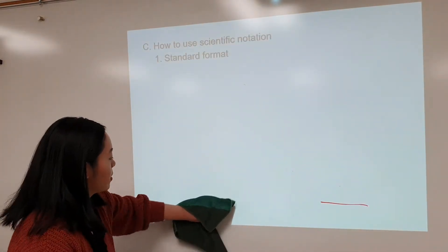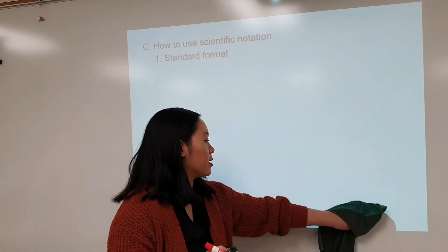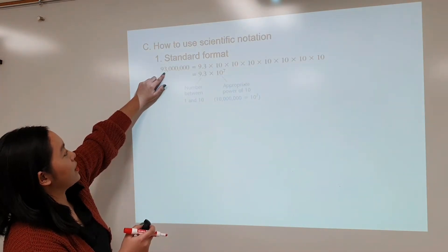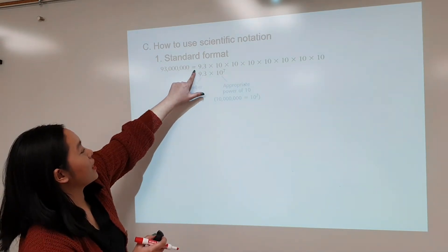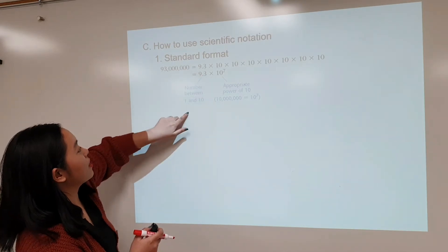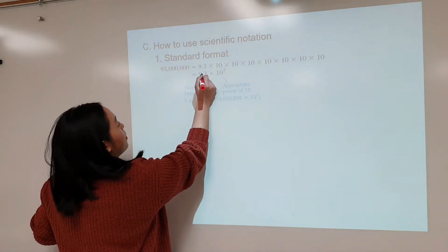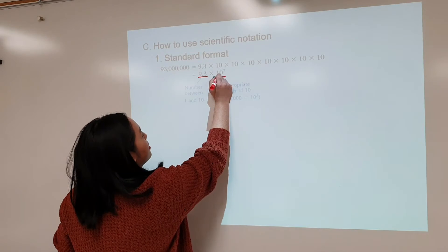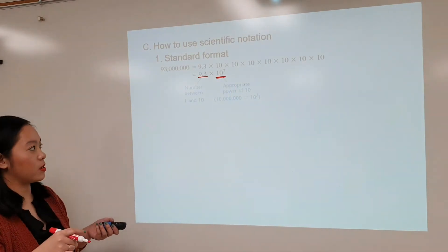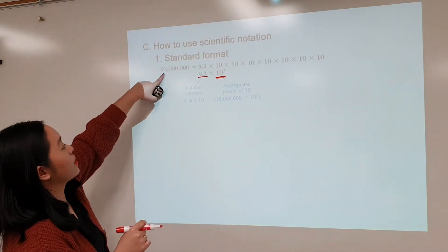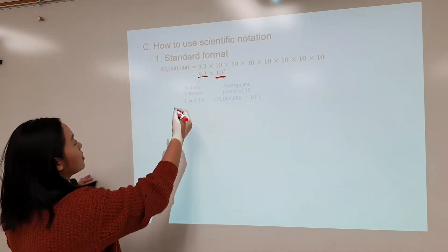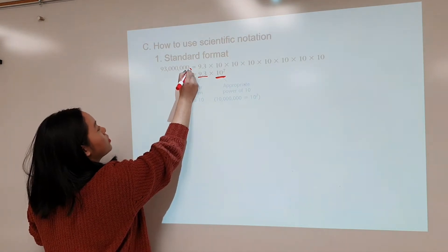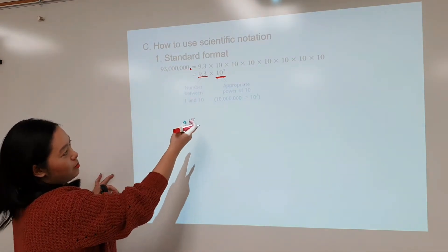So how do you actually write scientific notation? There's a general format we follow. For example, 93 million — when you break it down, there are two parts to scientific notation. The first part is a number between 1 and 10, multiplied by 10 to an appropriate power. For 93 million, there is an invisible decimal at the end, and you move it until you get a number between 1 and 10. Let me show you how it works.